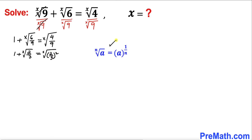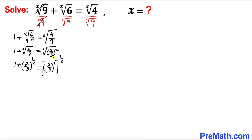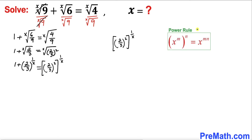Now let's recall the basic rule that we can convert an x-root to a power of 1/x. So we can write this as 1 plus (2/3)^(1/x) equals (2/3)^(2 · 1/x). Then let's recall the power rule of exponents — we can multiply these two nested exponents, giving us (2/3)^(2/x).